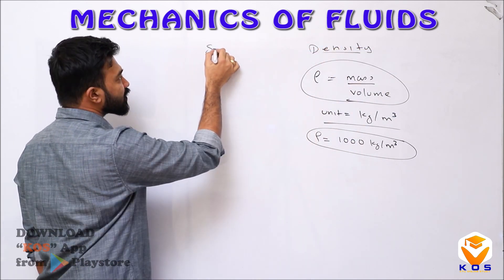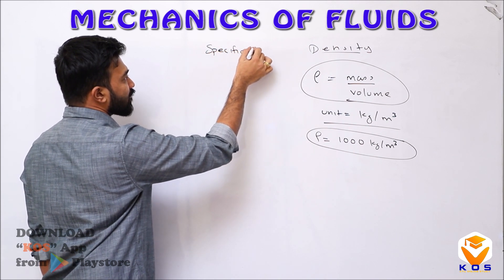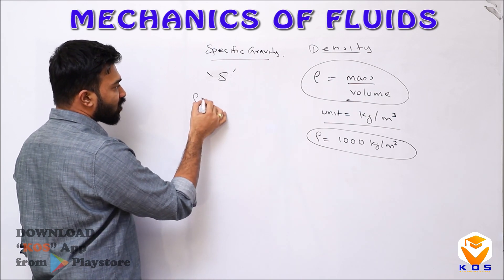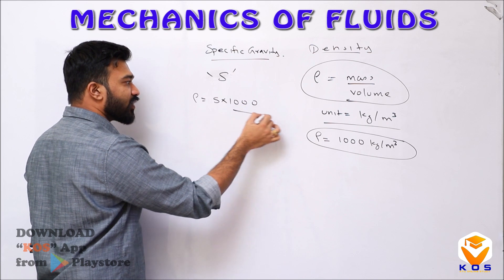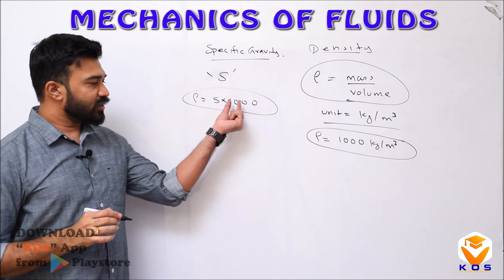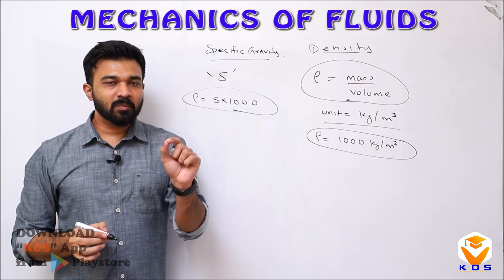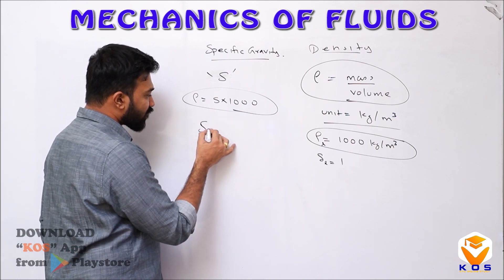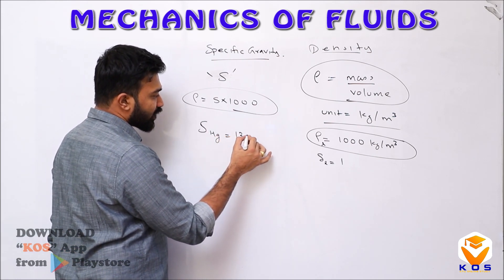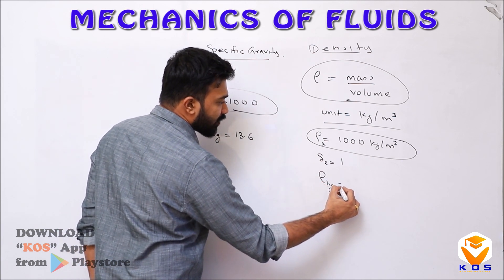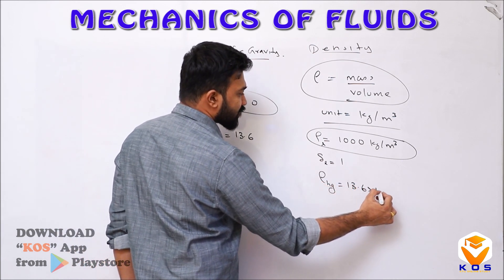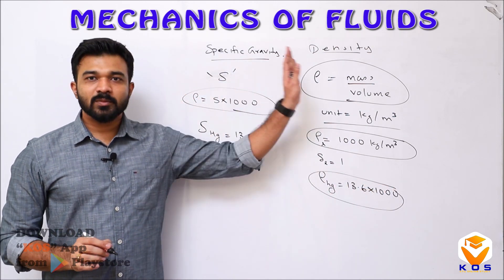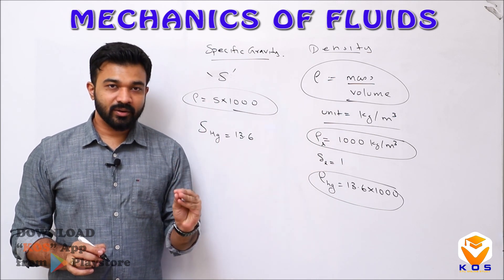The next important property is specific gravity, represented by S. The density of any fluid is given by the equation S into 1000 — that is, specific gravity multiplied by 1000 gives the density of that fluid. The specific gravity of mercury, Sg, is equal to 13.6. So the density of mercury will be equal to 13.6 into 1000. Density and specific gravity are very important terms related to fluid mechanics.